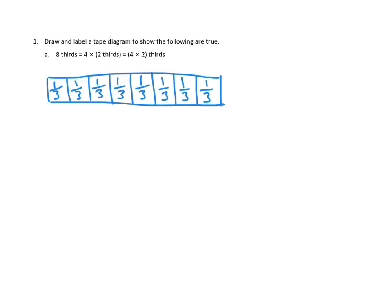Is that the same as 4 times 2 thirds? Well, I could make groupings of those 2 thirds. I could say that right here is 2 thirds, and I could do the same with the next two — that is 2 thirds. Sorry for my handwriting, it's not easy with the stylus. That is also 2 thirds.